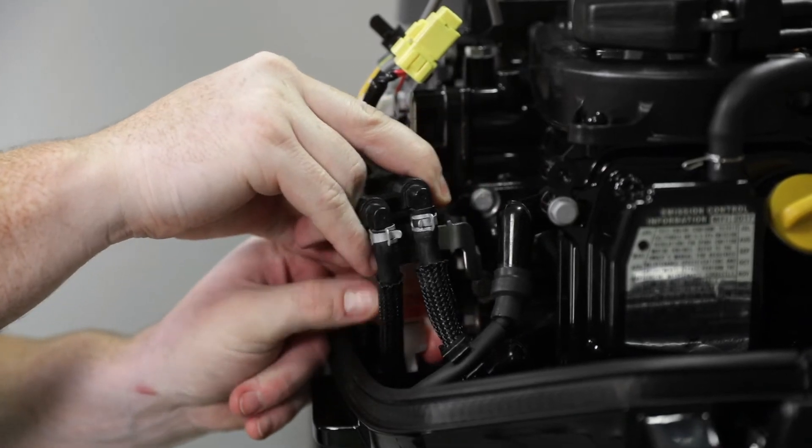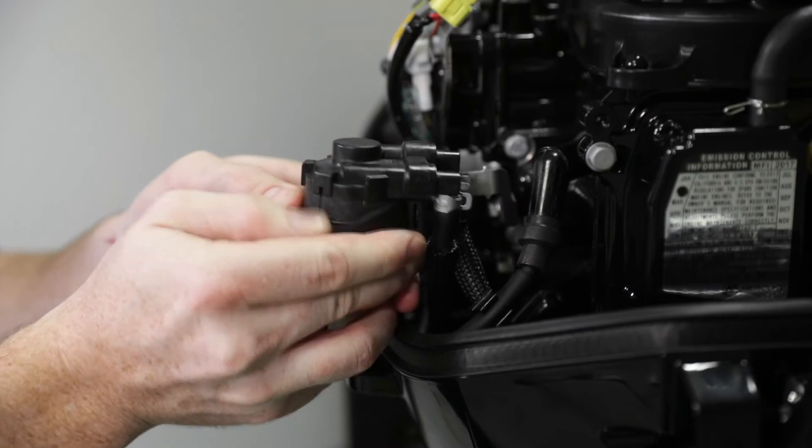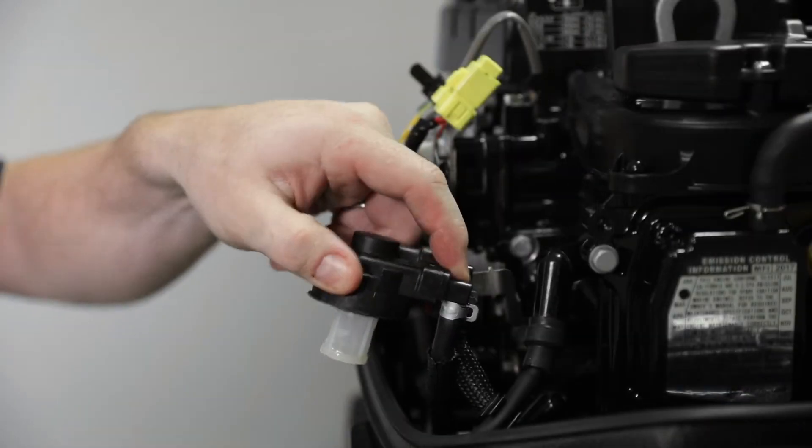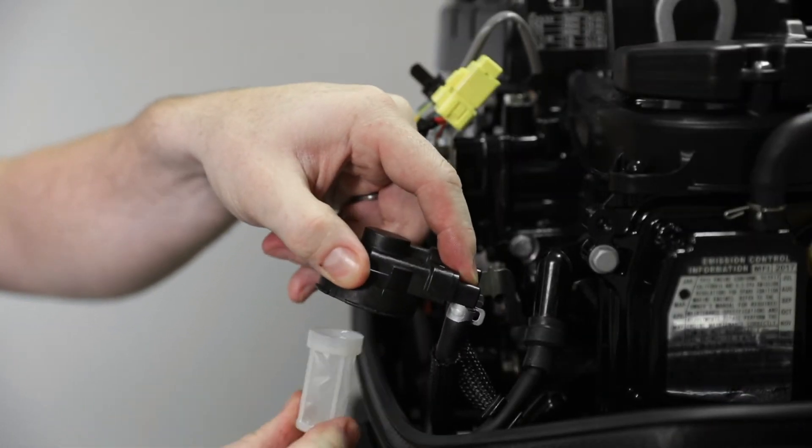Pull the filter assembly off the mounting bracket on the engine. Remove the rubber mount from the filter assembly. Remove the sight bowl from the filter housing. Pull the filter element off the filter housing.